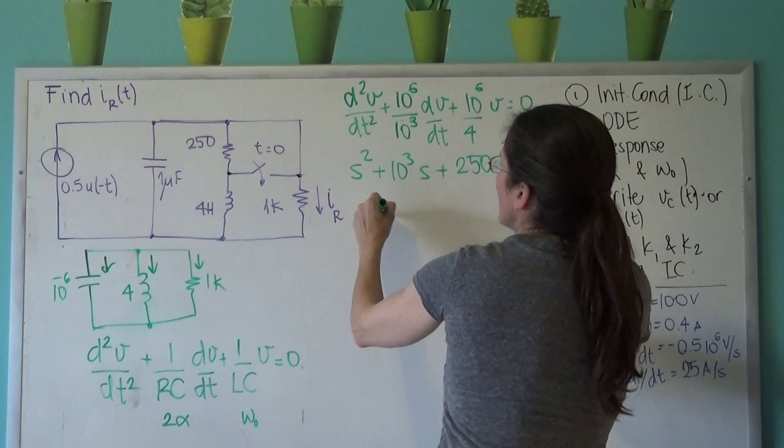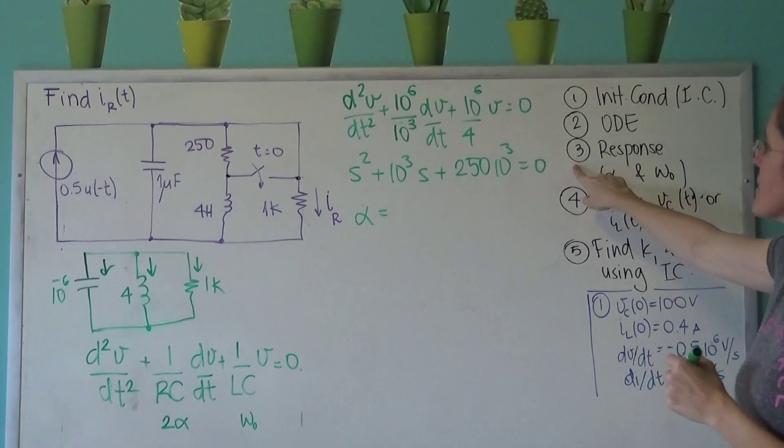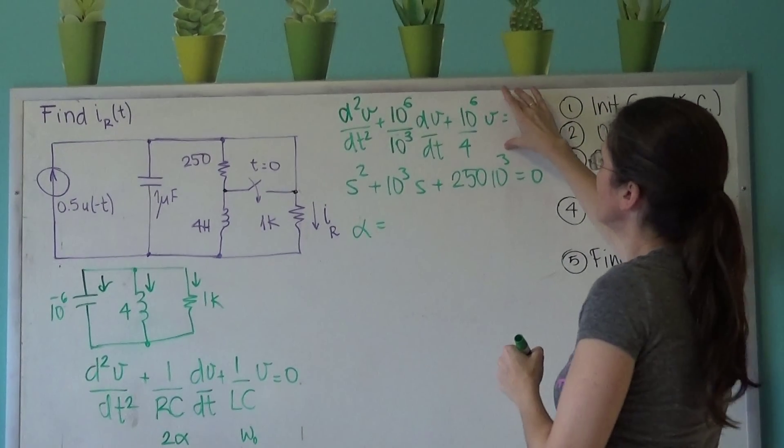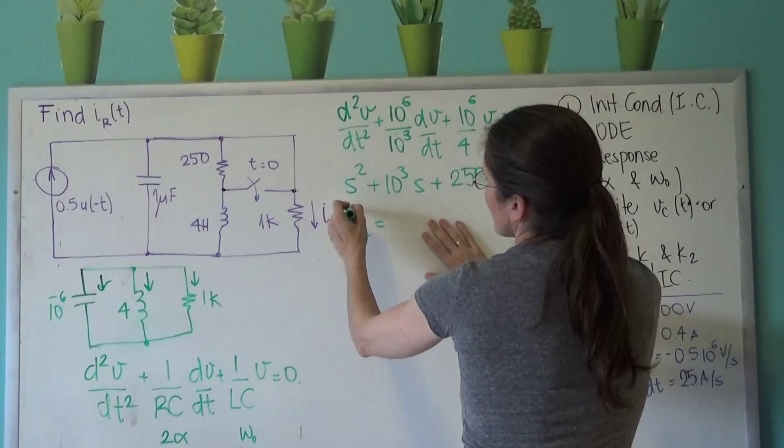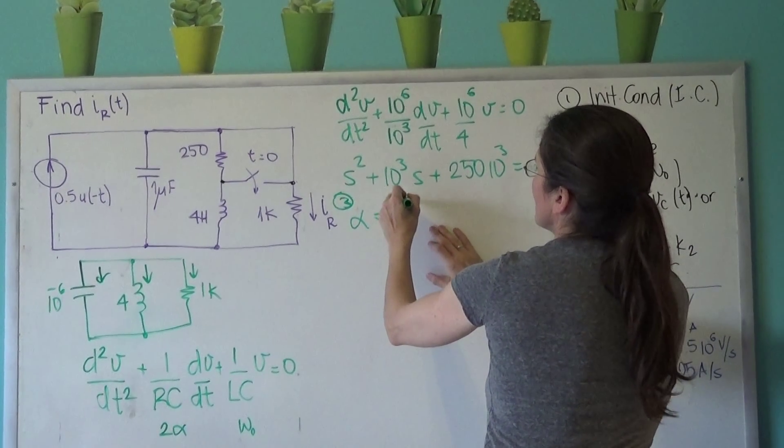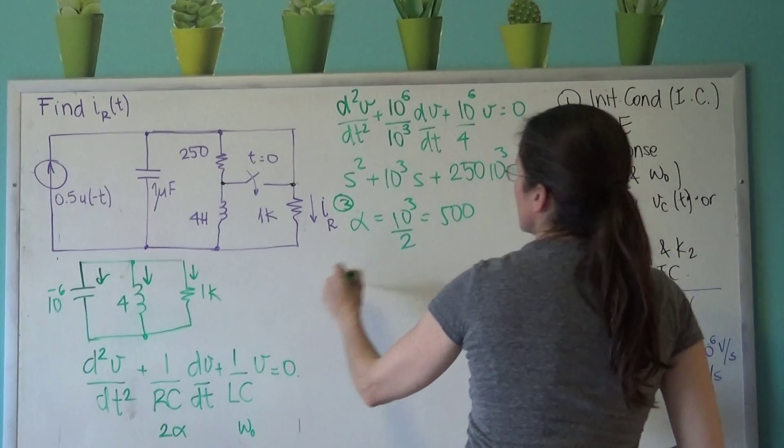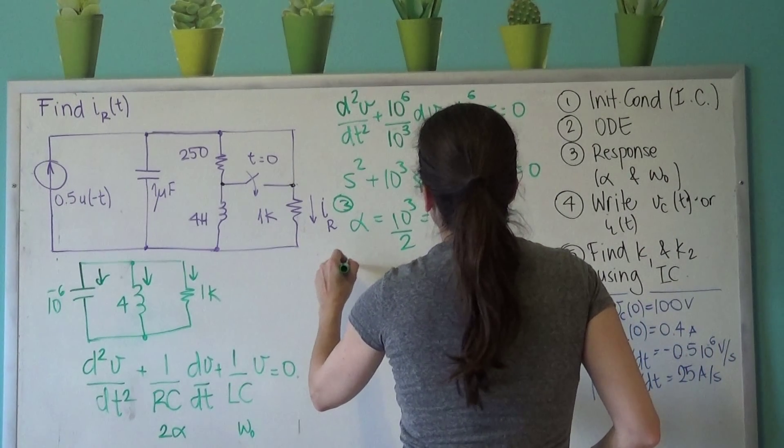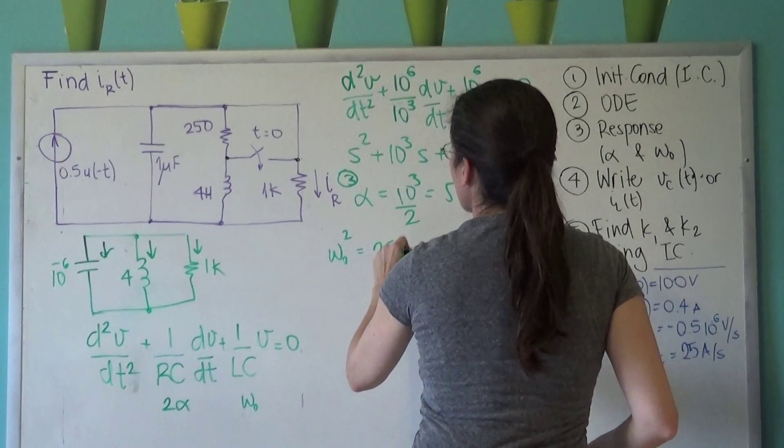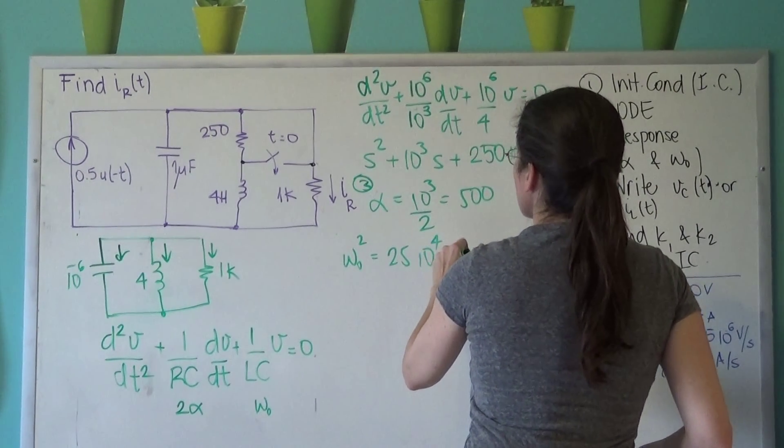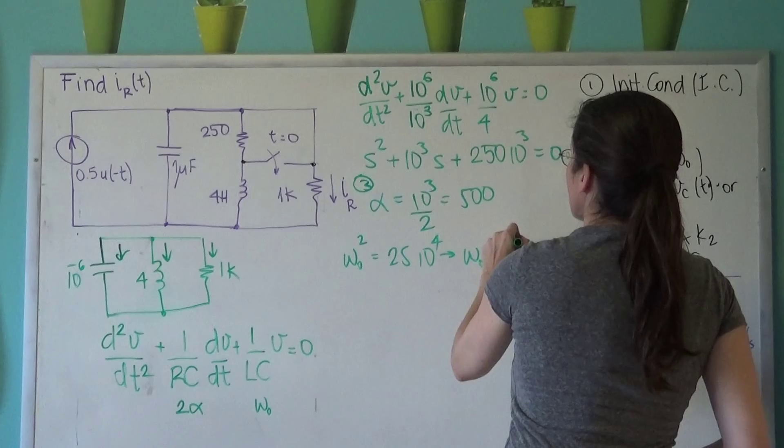So alpha, and so this is basically the ODE, this one. And now I'm going to step three, which alpha is 10 to the 3 divided by 2, which is 500. Omega naught squared is 25 times 10 to the 4, so omega naught is 500.